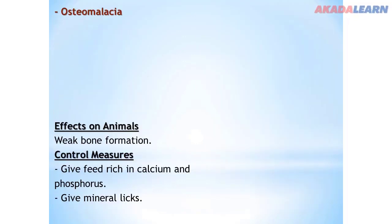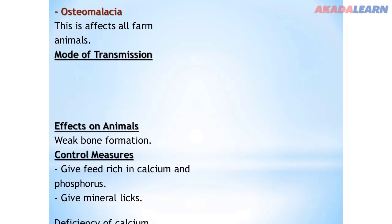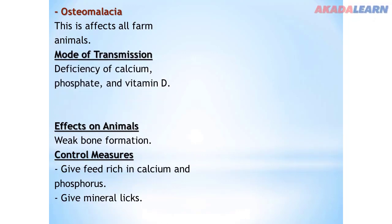We have osteomalacia. This disease affects all farm animals. Mode of transmission: deficiency of calcium, phosphate, and vitamin D. Symptoms: inability to stand and weak bone formation. Control: give the animal feed rich in calcium and phosphorus, and also give the animal mineral licks.